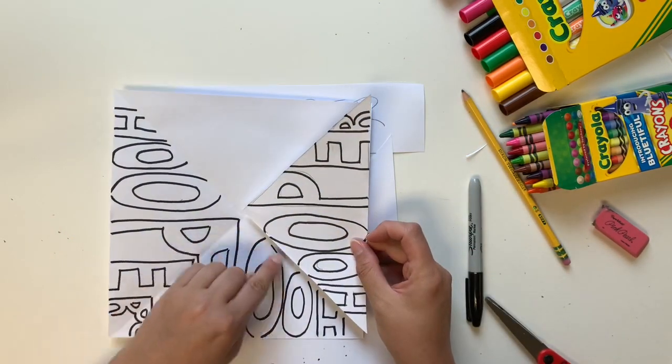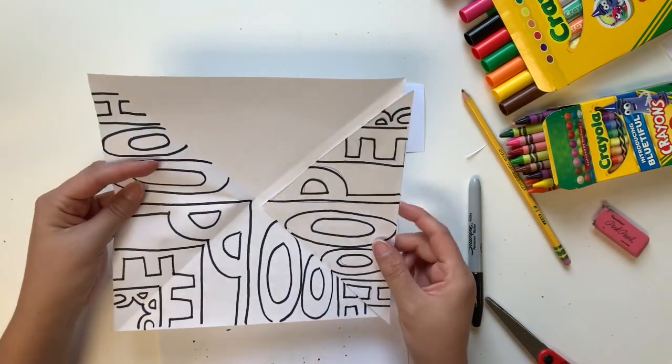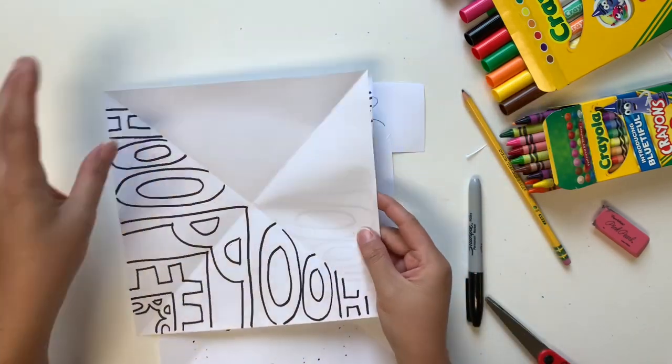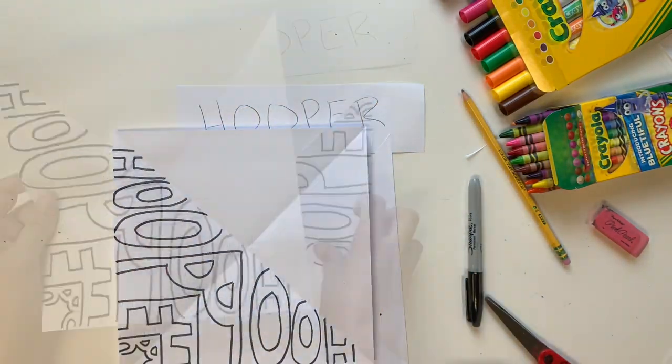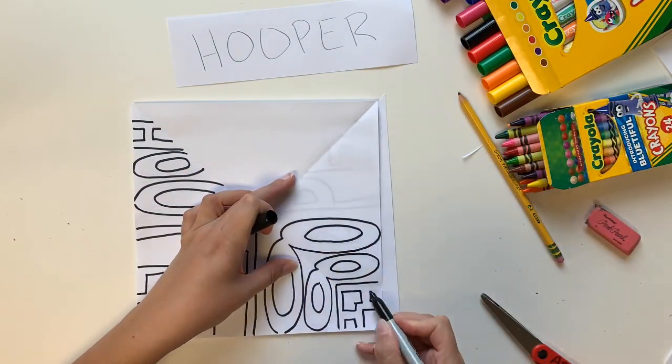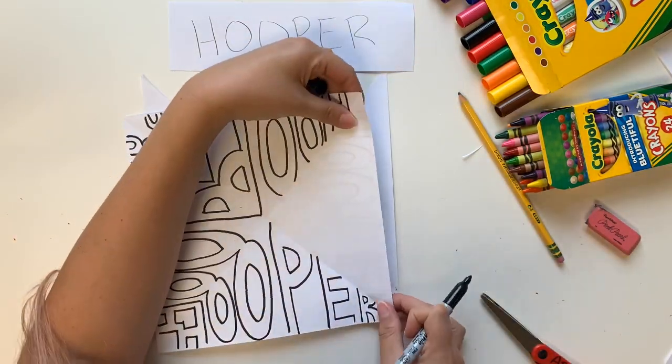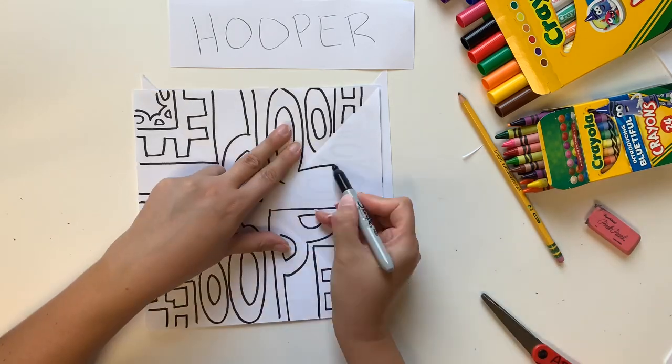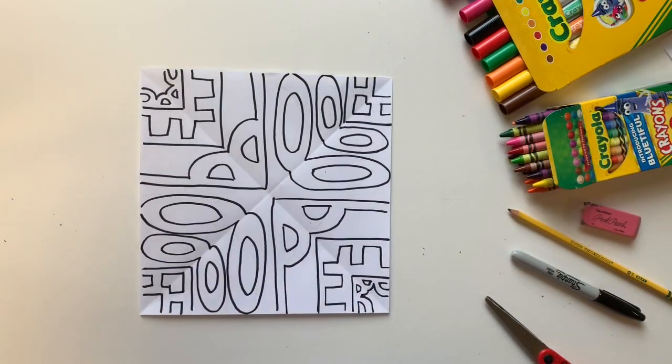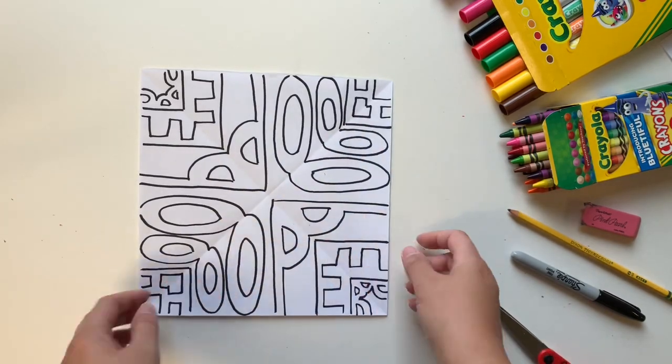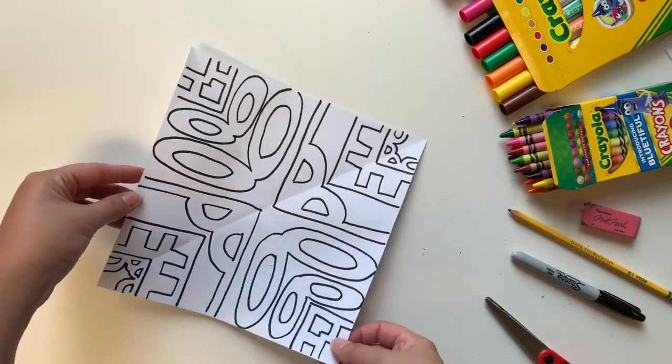Every time you move to a new section make sure to flip over the name template so that the letters always match up to continue your symmetry. And now I have my completed radial name design. It looks kind of like when you're looking through a kaleidoscope.